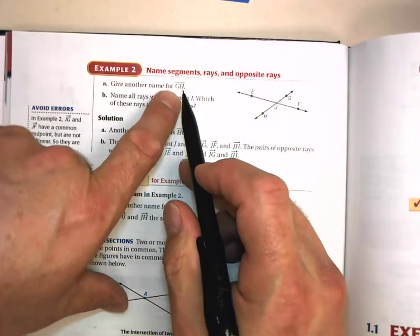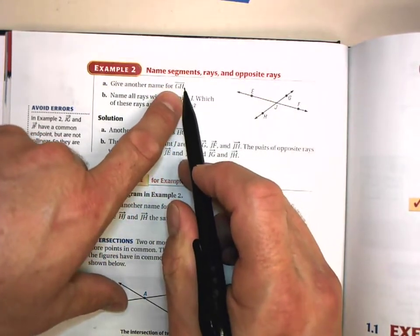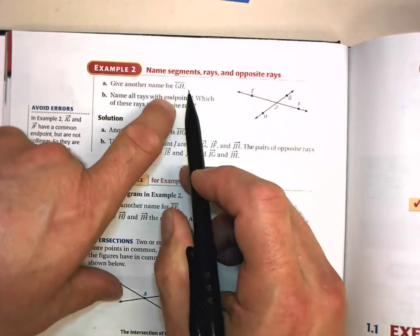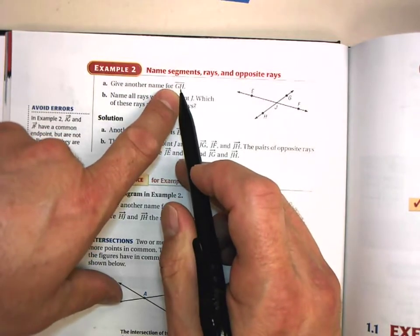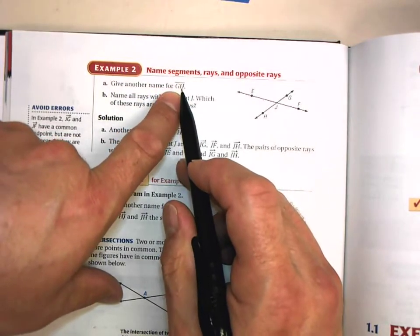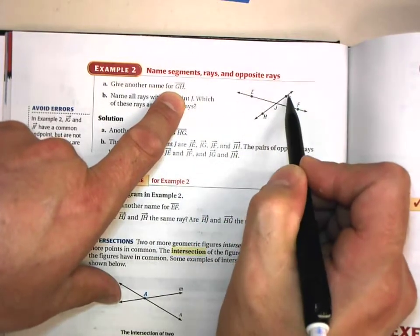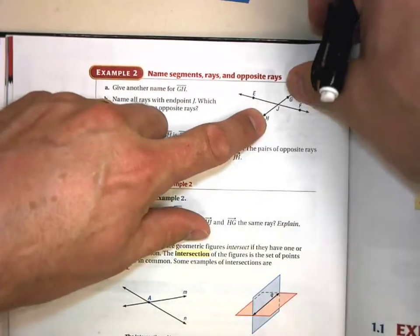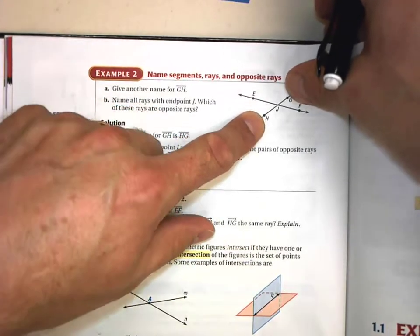But wait a second, when I'm talking about a line segment, each of the points used to label a line segment have to be the endpoints. So GH, that's segment GH. I'm not looking at the going beyond that, just between G and H.